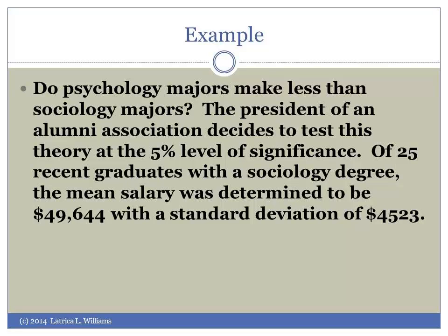Let's explore an example. Do psychology majors make less than sociology majors? The president of an alumni association decides to test this theory at the 5% level of significance. Of 25 recent graduates with a sociology degree, the mean salary was determined to be $49,644 with a standard deviation of $4,523.